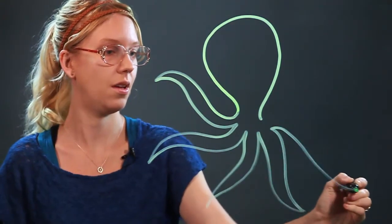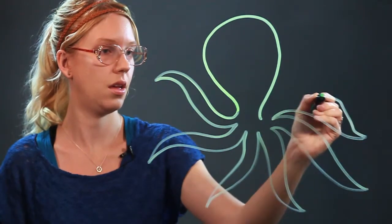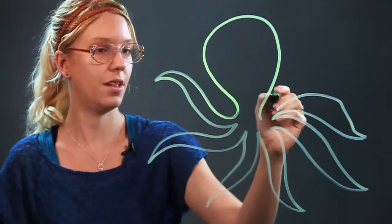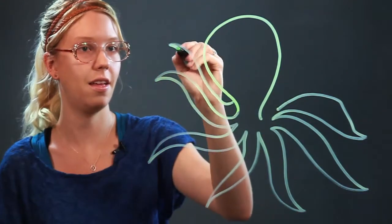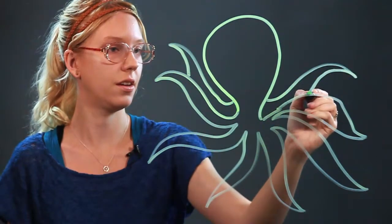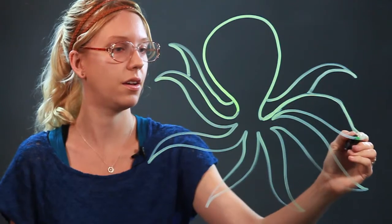Three, four. How many have we got? One, two, three, four, five, six. Let's put a couple behind his head. Seven, eight. So that's your basic octopus.